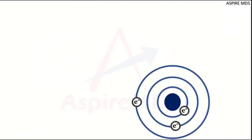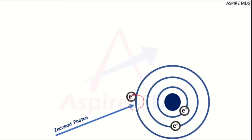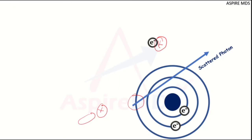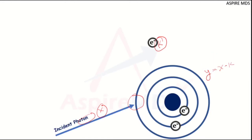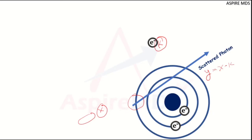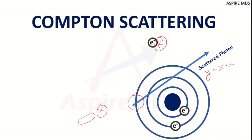In Compton scattering, the incident photon acts upon an electron, and some of the energy of this photon is taken up by the electron, which is then moved out of its orbit. If the photon's initial energy is x and the kinetic energy taken by the electron is k, then the scattered photon retains energy equal to x minus k. The direction of this photon is also changed. This kind of scattering is known as Compton scattering.